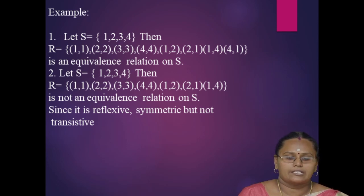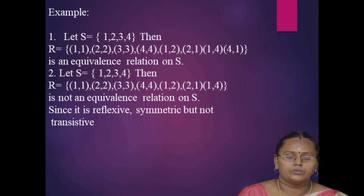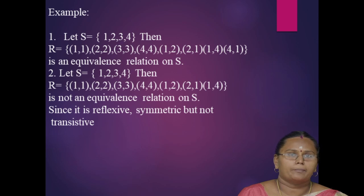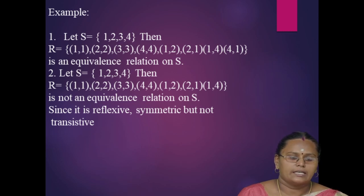Next, let S = {1, 2, 3, 4}. Then R = {(1,1), (2,2), (3,3), (4,4), (1,2), (2,1), (1,4)} is not an equivalence relation on S, since the relation R is reflexive and symmetric but not transitive.